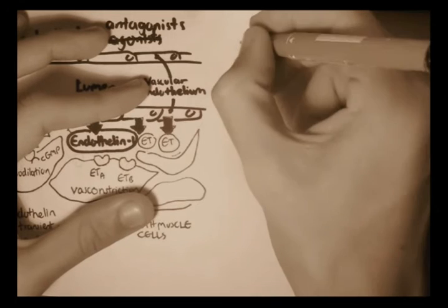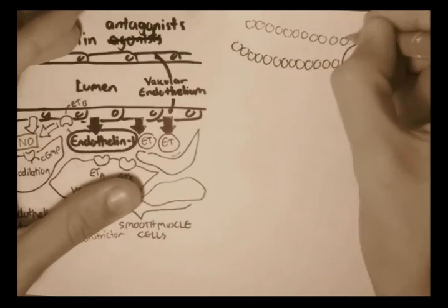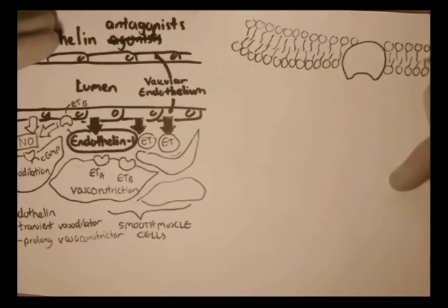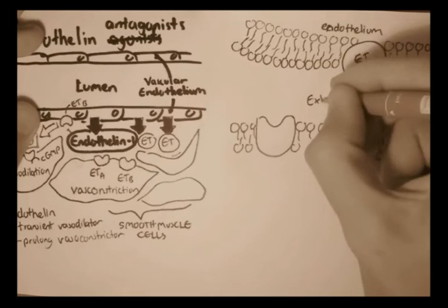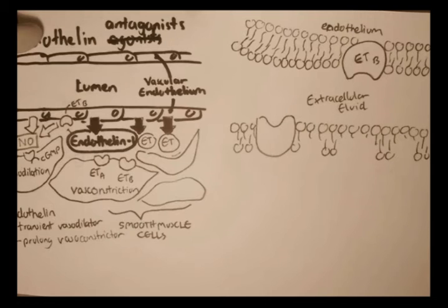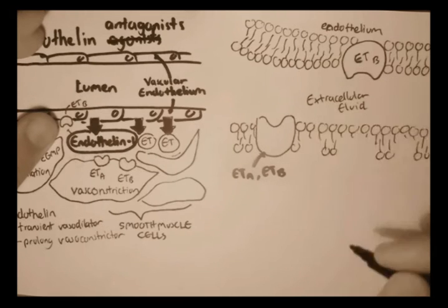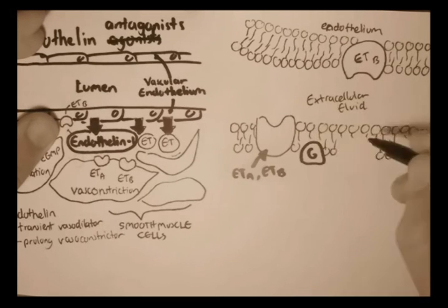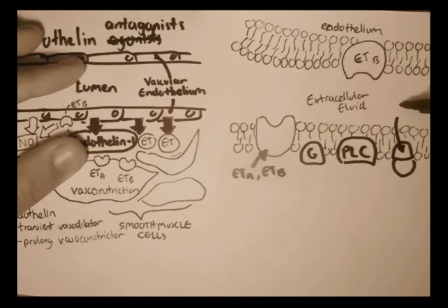So here we have the single cell membrane lipid bilayer of the endothelium cells, the vascular endothelium cells, with the endothelium B receptor. And on the other side we have the smooth muscles separated by extracellular fluid, and this receptor is the endothelium A or endothelium B receptor. And it works through a G protein mechanism, and the target protein is phospholipase C. And as you may know, phospholipase C affects the phosphoinositol-4,5-bisphosphate, or PIP2.